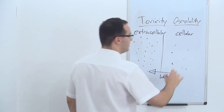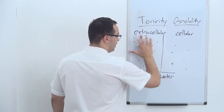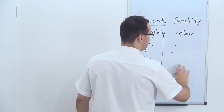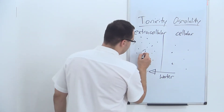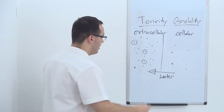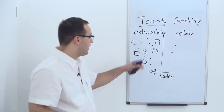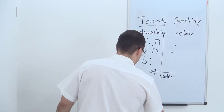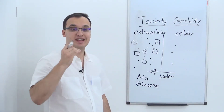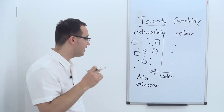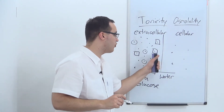What's the difference between osmolality and tonicity? In this case the tonicity outside is also larger than inside — so what's the difference? The difference is that sodium and glucose are 'effective' solutes — they cannot move to the other side of the membrane; they cannot penetrate this membrane.